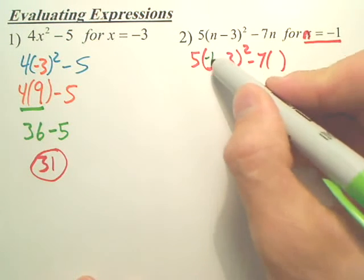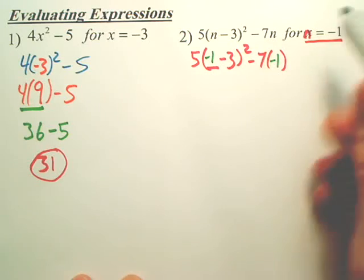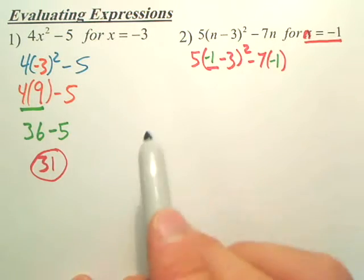Negative 1. You put a negative 1 there, and you put a negative 1 there. So that's you're evaluating by plugging in negative 1 for N.